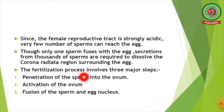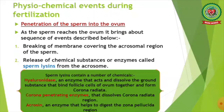The fertilization process involves three major steps: first, penetration of the sperm into the ovum; second, activation of the ovum; and third, fusion of the sperm and egg nucleus.